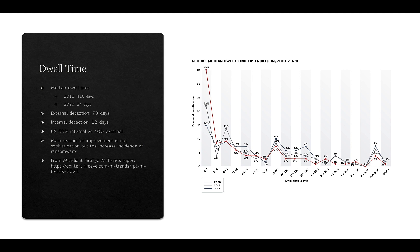In 2011, dwell time was around 416 days — well over a year. By 2020, with the increased focus on cybersecurity, that improved dramatically to 24 days, though that is still an extensive amount of time. External detection takes on average about 73 days, while internal detection is down to 12 days. In the US, one survey found that 60 percent of detections were internal and 40 percent were external.